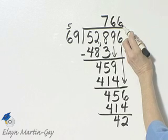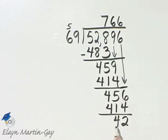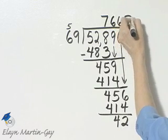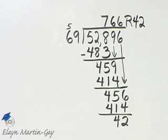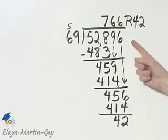And so it's 766 remainder 42. How do you check? Multiply 69 times 766 and add to that 42. You should get 52,896.